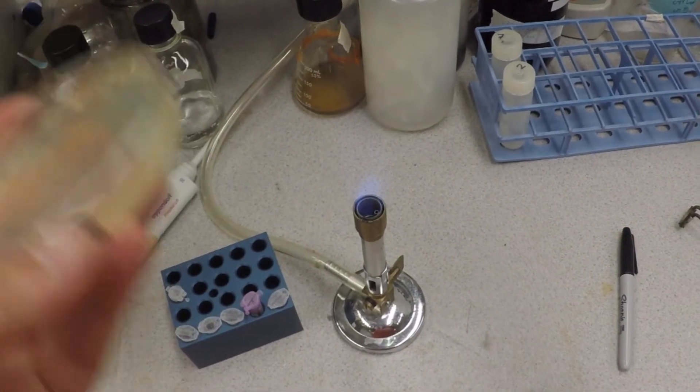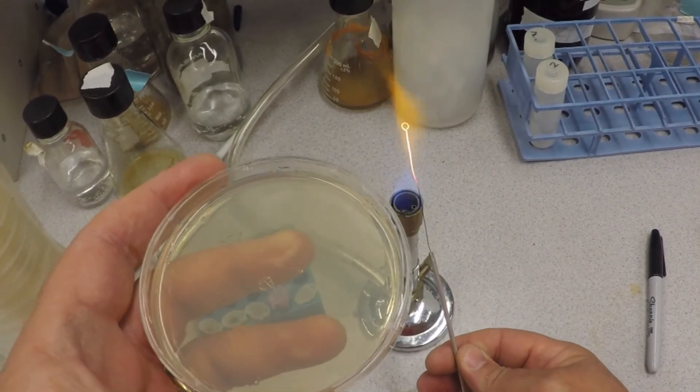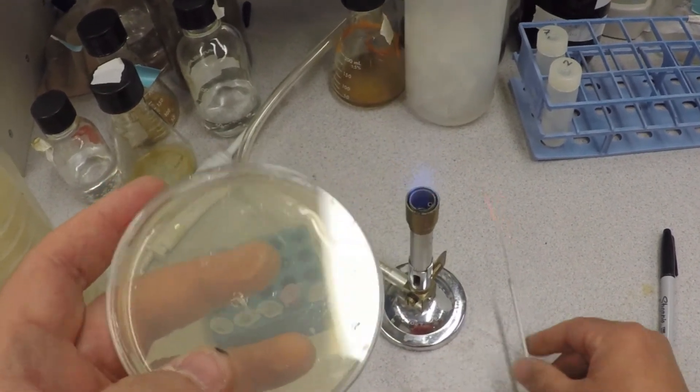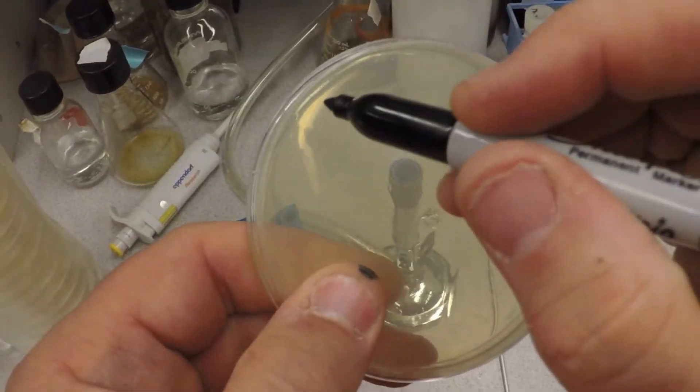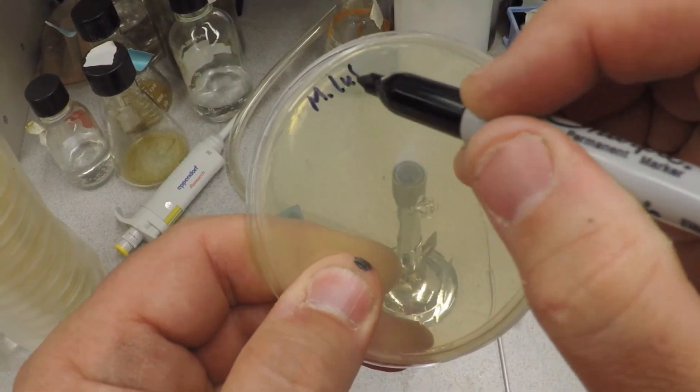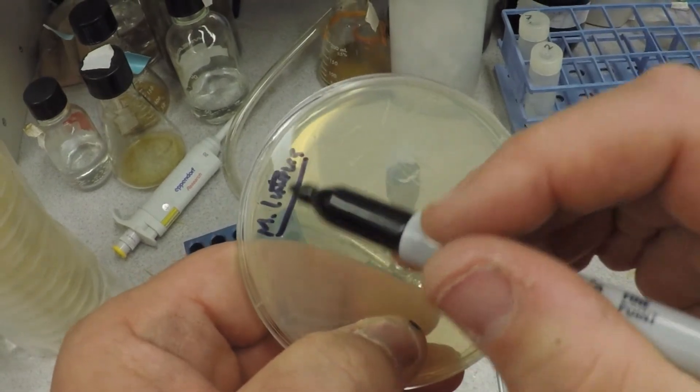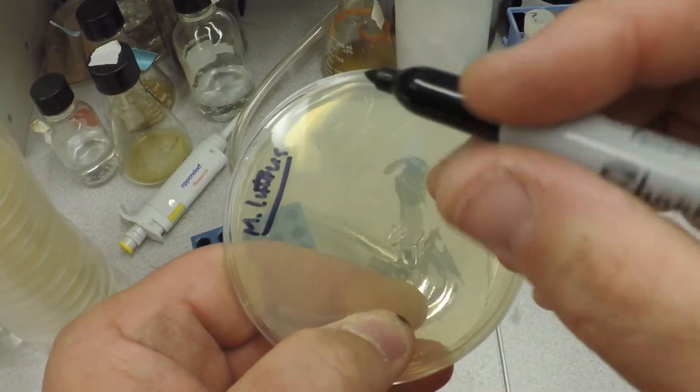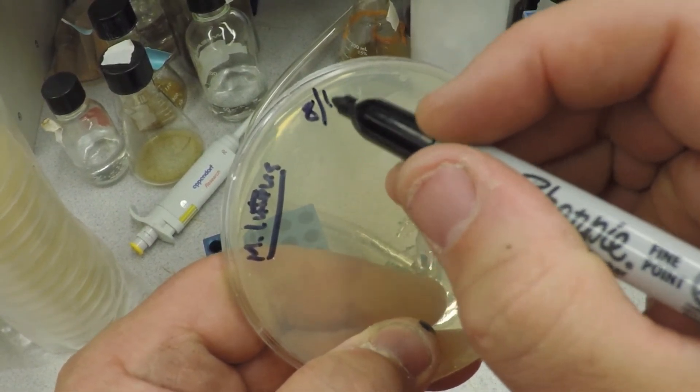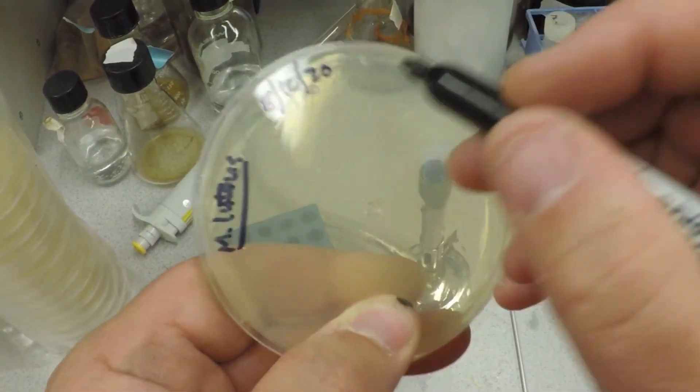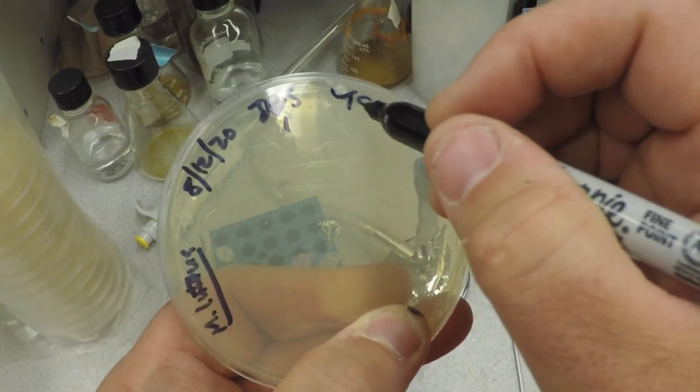You have to get a feel for it and get used to it. Now that's sterilized, I'll label this. It's M. luteus. It's a genus and species, so you should underline it or write in italics, I can't do that. Today is again the 12th, I'm DRS, and this is TSA agar.